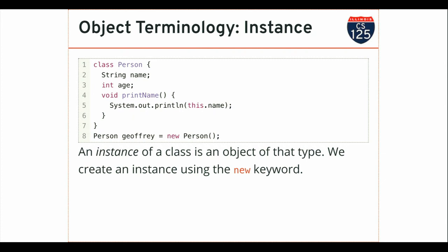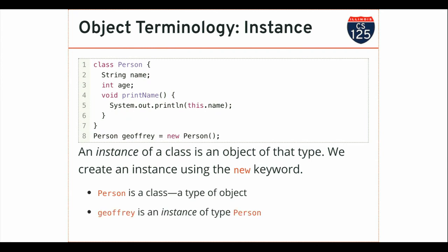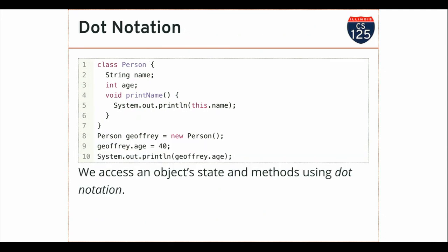After line eight executes, Jeffrey is a variable of type person — I can set its name and I can set its age. Person with a capital P is a class; it's a type of Java object. Jeffrey, in this example, is an instance of that class, or sometimes just an object — an object of type person. Now, dot notation: how do we access the state and behavior of objects? Some of this you've seen already with strings and arrays, but you didn't really understand what you were doing. Now hopefully this makes more sense. The dot notation is what allows me to access the properties and methods of an object.